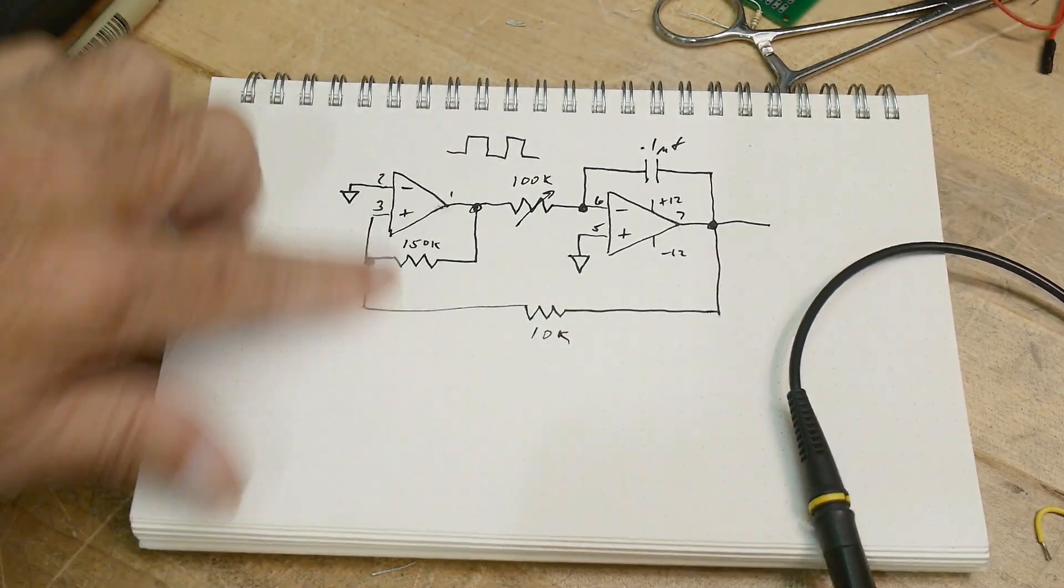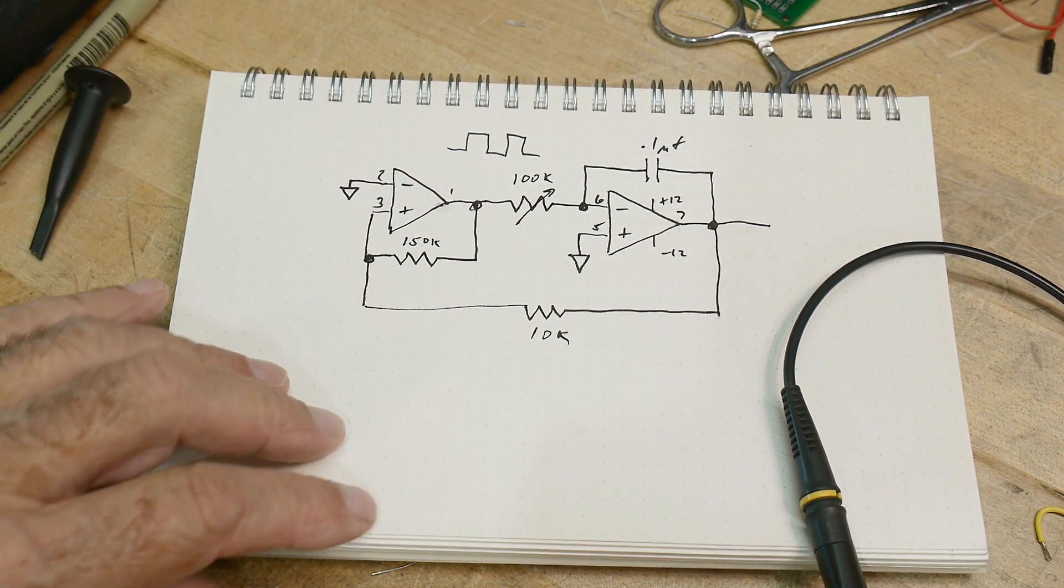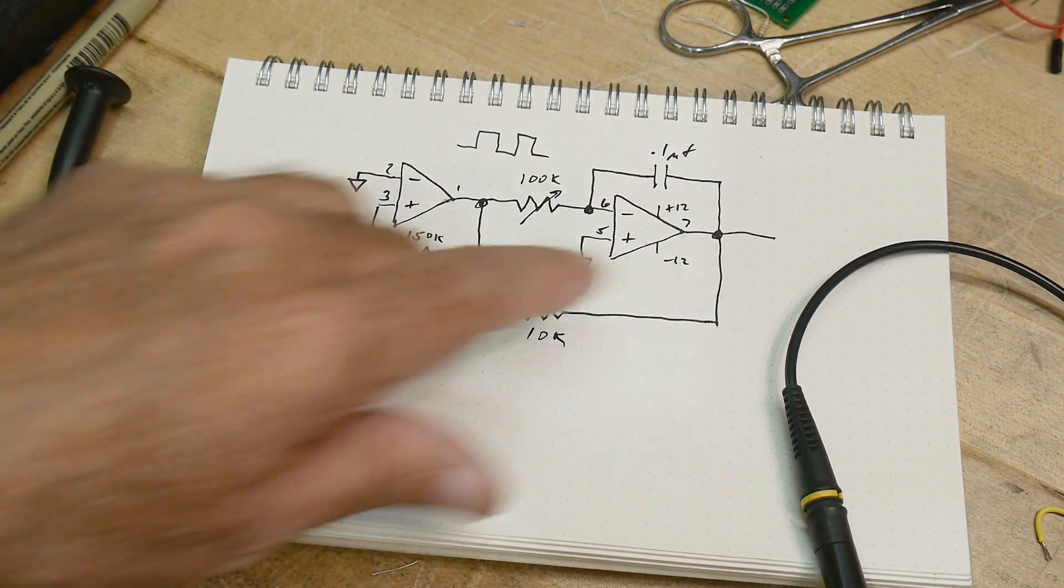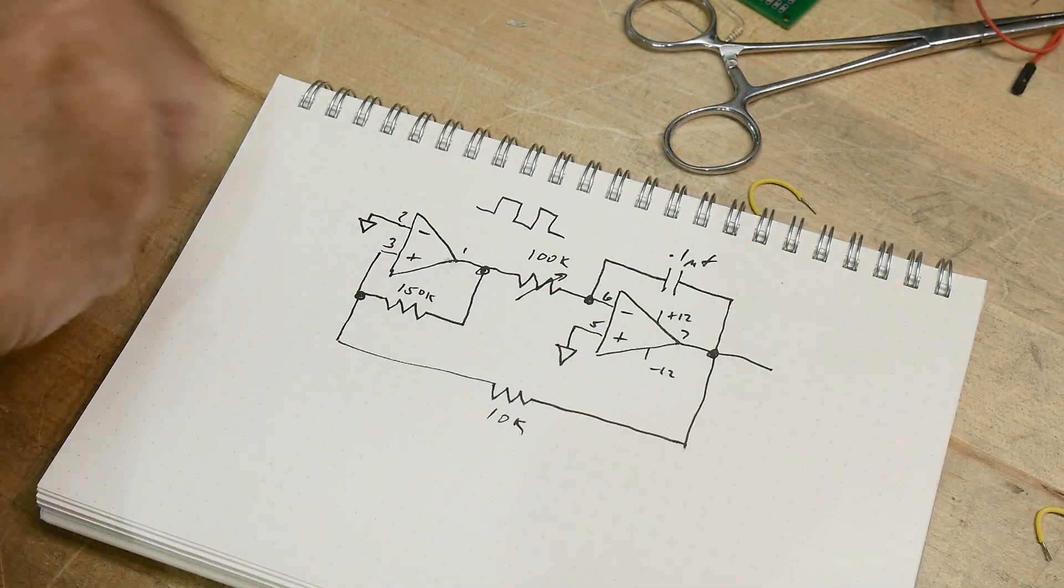But you get about a one volt swing out of this as it comes around and flop-flops over here. Yeah, there we go, so we have—over here, let's draw on the schematic, get that out of the way.